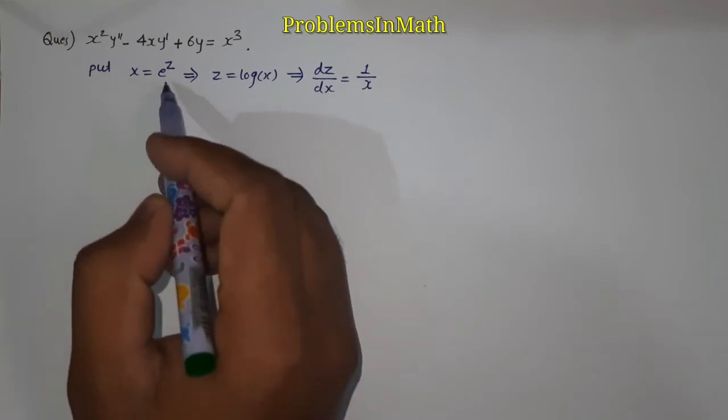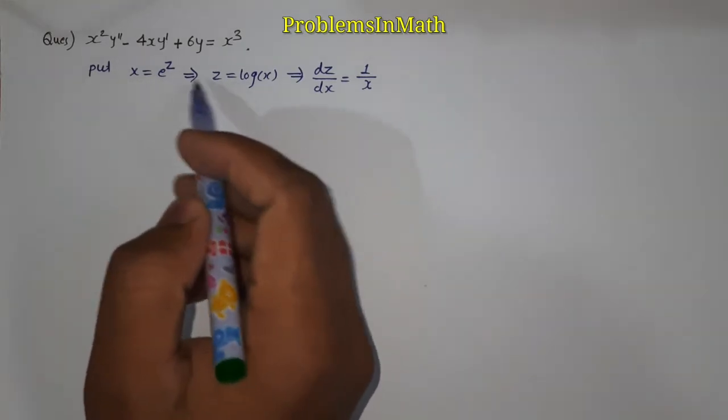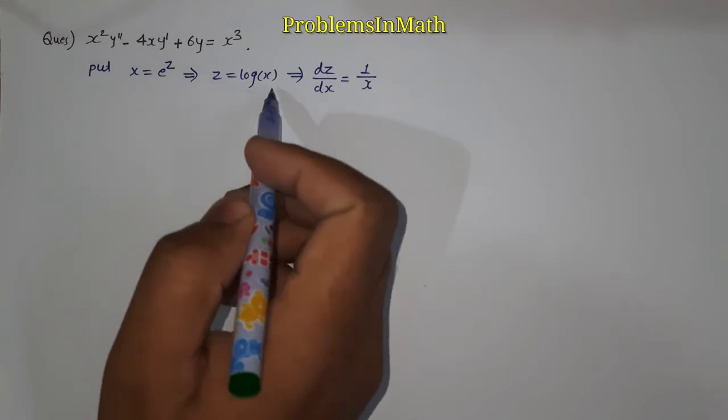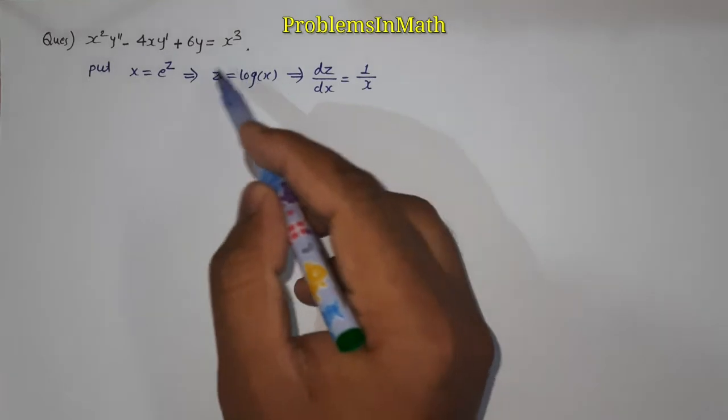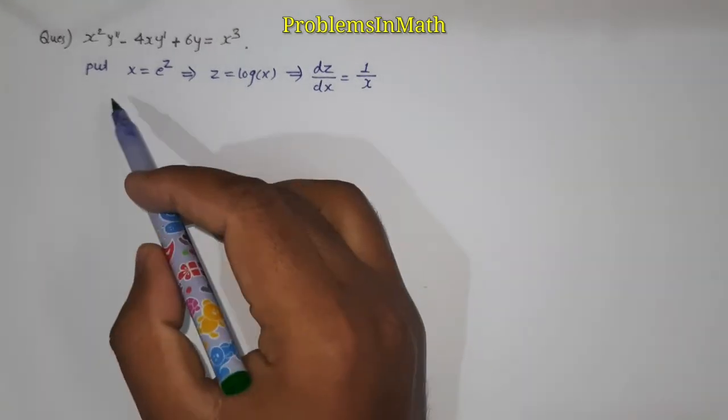Here as I have written, put x equal to e to the power z. Taking the log both sides, z is equal to log x, implies dz over dx equal to 1 upon x. This is our first step.